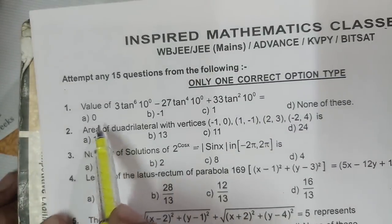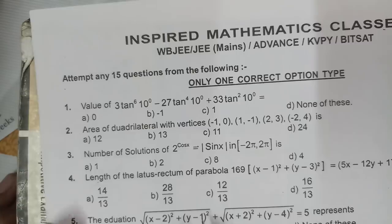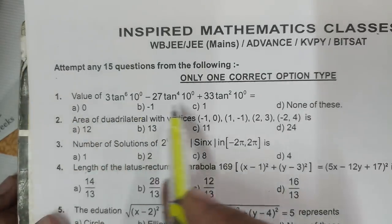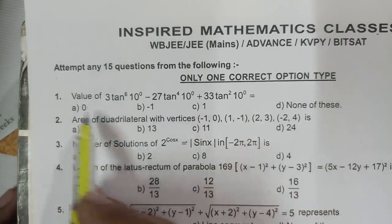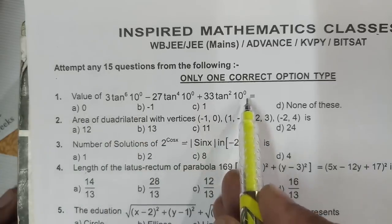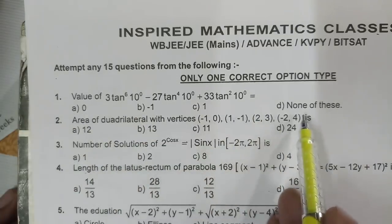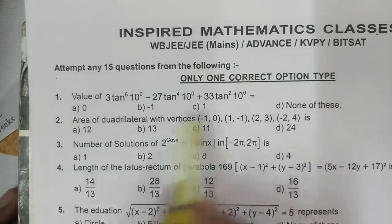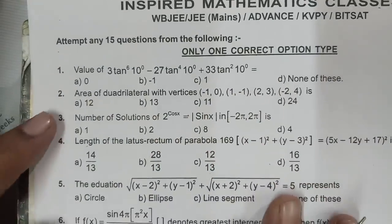Questions which are very very important for 2019 joint entrance exam. Question number one: value of this question, which is the correct option? Only one correct option type: option a, b, c, d. Question 2, carefully observe this question and please note this question in your exercise book.